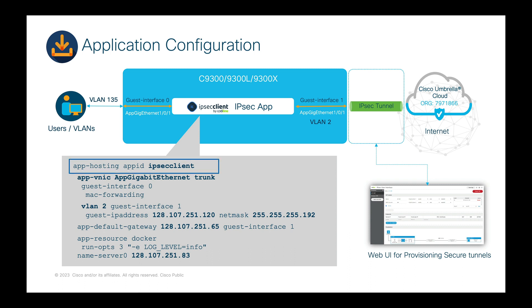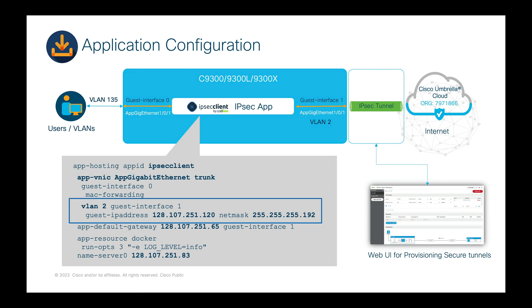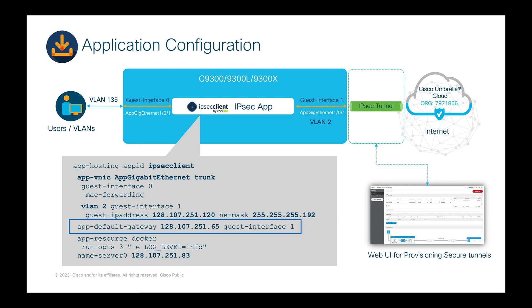First, we need to configure the application ID — here configured as 'ipsec client'. Then we specify the AppGigEthernet interface to be used as a trunk port, where interface 0 maps to ETH0 in the application. We configure ETH0 with MAC forwarding. For ETH1, VLAN 2 is mapped to interface 1 and assigned a static IP. We will use this IP to access the application's web UI. Alternatively, ETH2 (the management interface) can be used. The next line specifies the default management gateway for the app's interface 1 — the IP that helps ETH1 reach the internet. Finally, Docker resources are listed and the DNS server IP is specified.